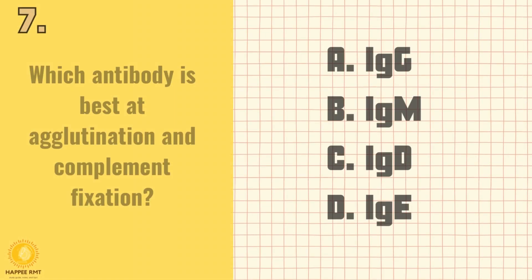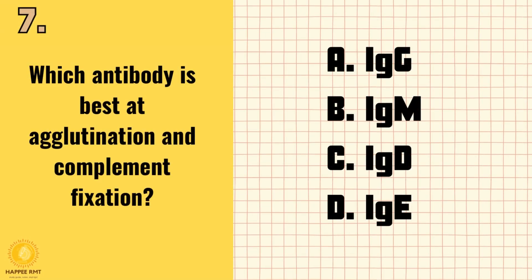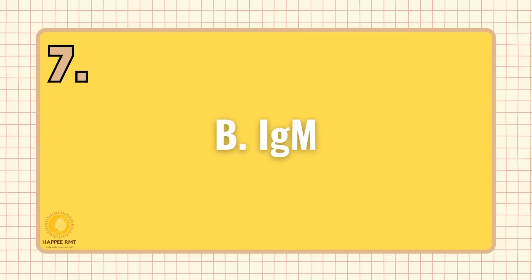Number 7. Which antibody is best at agglutination and complement fixation? A. IgG. B. IgM. C. IgD. D. IgE. Answer is B: IgM.